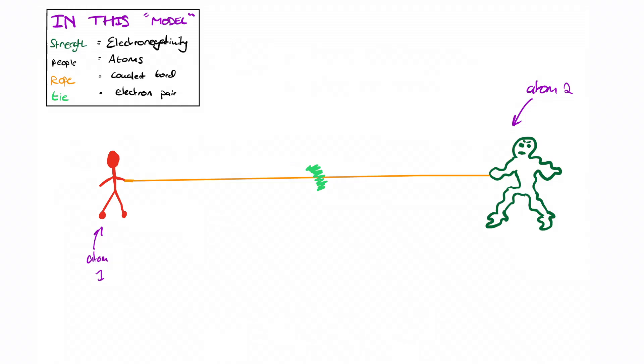You've got two atoms that we're going to represent with two people, a more electronegative one and a less electronegative one. The more electronegative is going to be a 6'10 bodybuilder, and the other atom is going to be a normal person. The rope is going to represent the covalent bond, and the tie in the middle is going to be the pair of electrons.